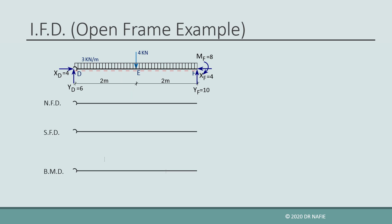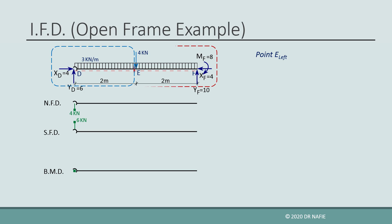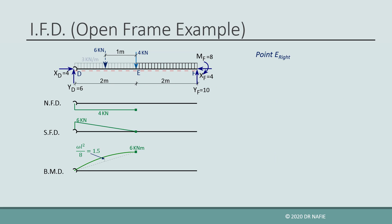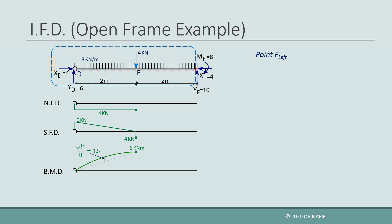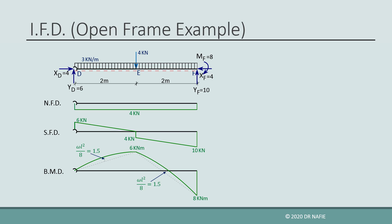Next, we will draw the internal force diagrams for beam DF. We start at the point just to the right of point D, then work on the points on the left and right of point E, and finally the point on the left of point F. We should be careful when working on point E, because when we cut at point E we also cut the uniform load. Therefore, only half the uniform load should be used when evaluating the internal forces at point E.